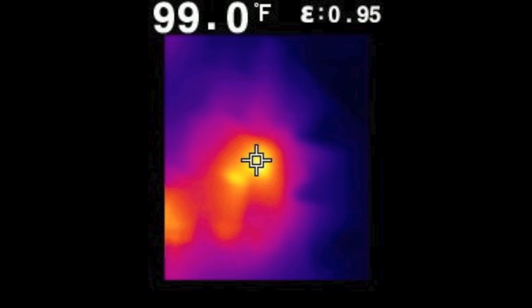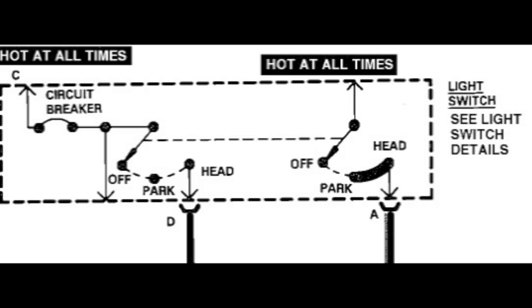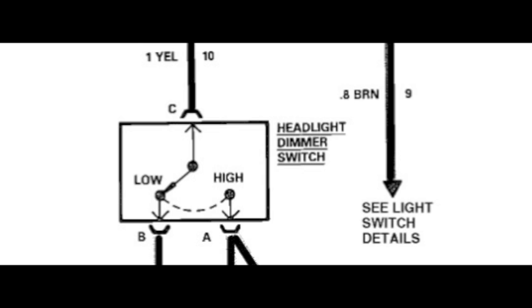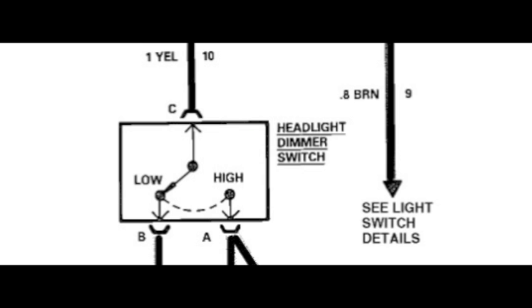So to me the fuse for the headlights does have current running through it as it should, but at only 99 degrees, I don't think that's our problem. According to the wiring diagram, the power goes through the fuse and then directly into the headlight switch, then the dimmer switch, and finally the headlights themselves.